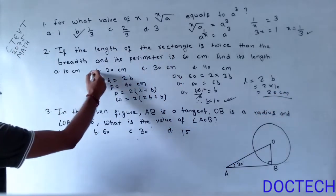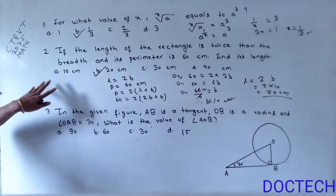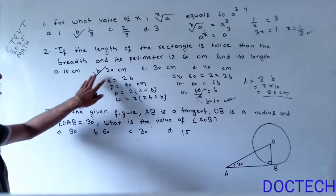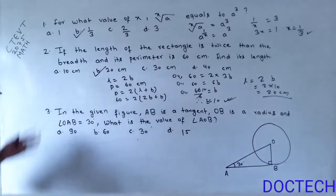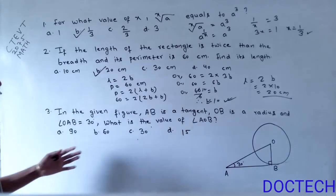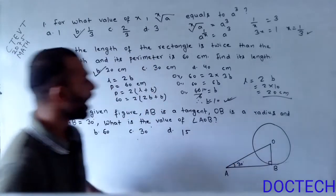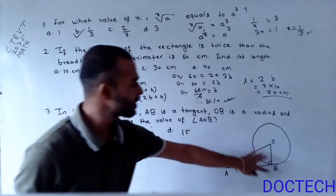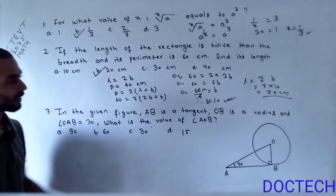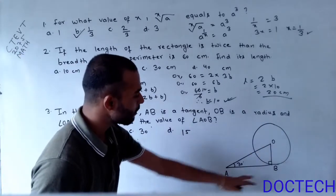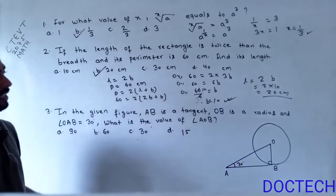Our answer will be 20 cm. It is quite an easy question. Moving to question 3: in the given figure, AB is a tangent and OB is a radius, with angle OAB equal to 30 degrees. What is the value of angle AOB?